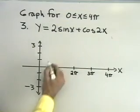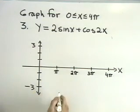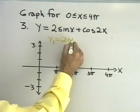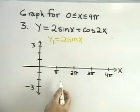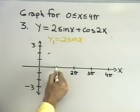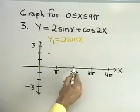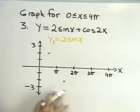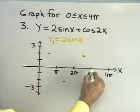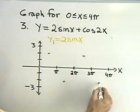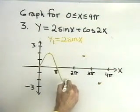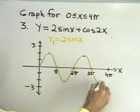Let's see if I can reproduce that by hand. y1 equal to 2 sine x has an amplitude of 2 and a period of 2π. It's a sine curve: starts at 0, goes up to 2, back down to 0, down to negative 2, then back up to 0 — that's one complete cycle. Then it does the same thing again between 2π and 4π: up to 2, down to negative 2, back up to 0.